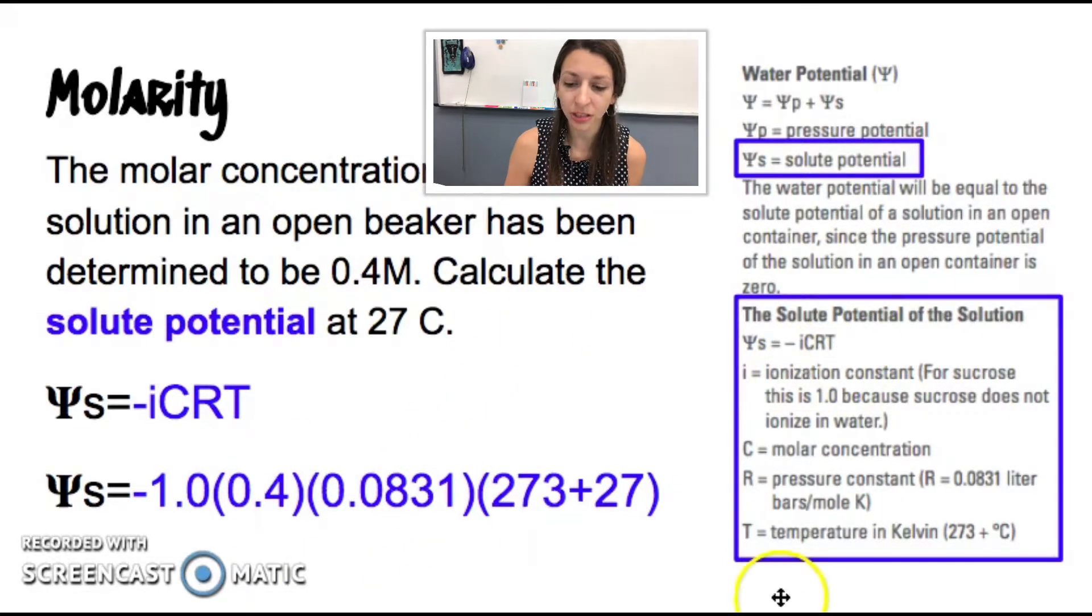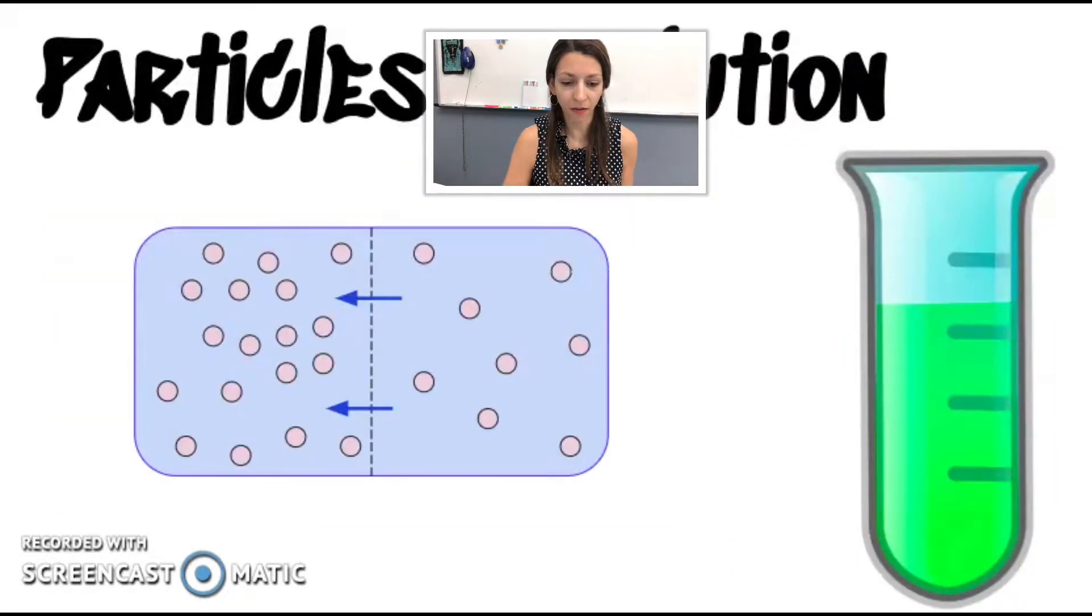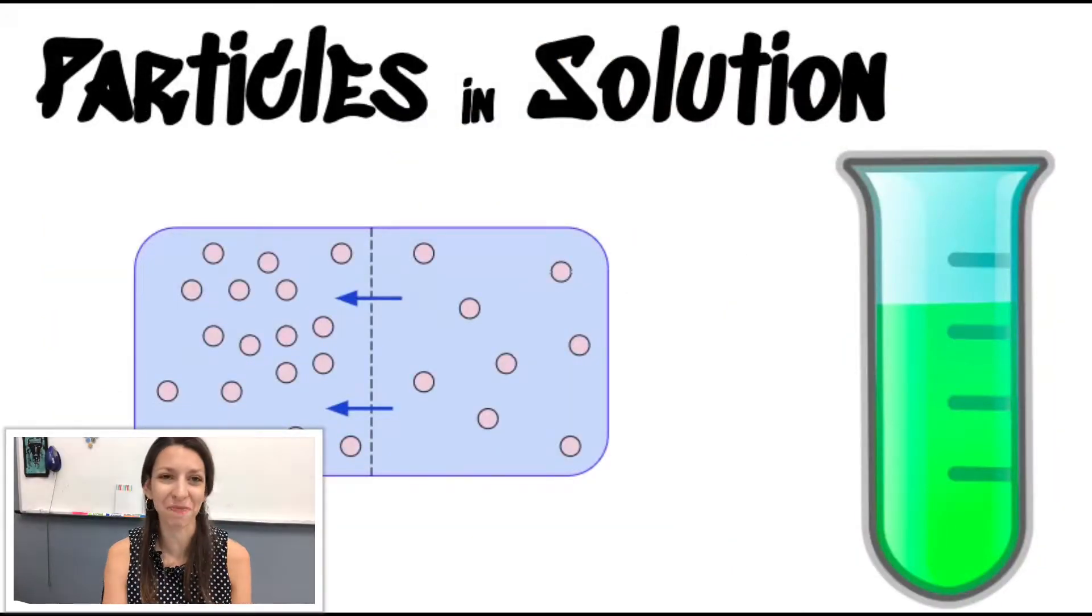And then the last one, temperature is in Kelvin. So all we need to do is take our temperature in Celsius and add 273. So we do that. We plug this in. And you guys can calculate that if you want to. All right. So next up, we figured out how to solve that. Let's talk about why we even care about how many particles are in a solution.